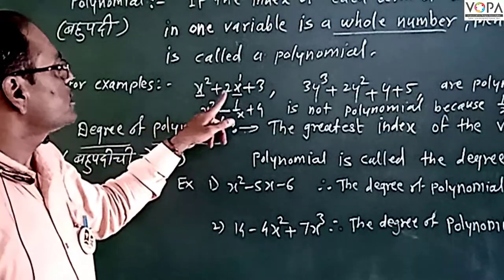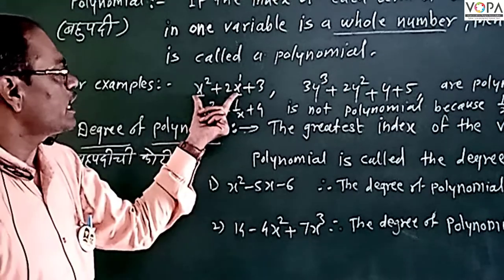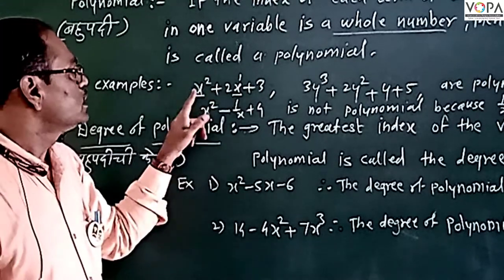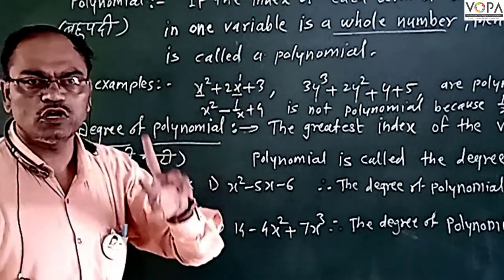For example, x square plus 2x plus 3. The variable is x, and the index is 2, 1, and the whole number is present.